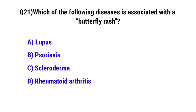Question number 21. Which of the following diseases is associated with a butterfly rash? The correct option is A: Lupus.